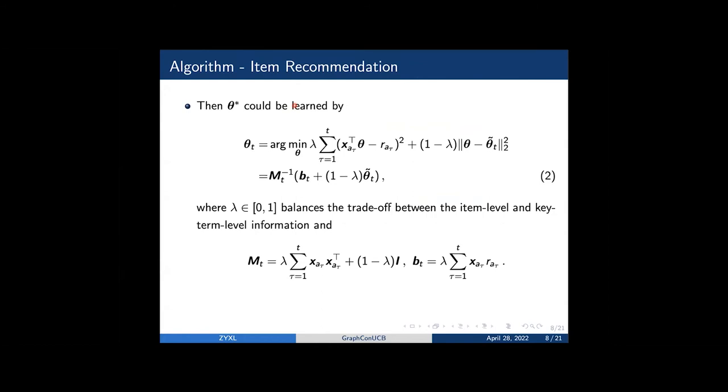After we learn a good tilded c star, we now can learn c star also by ridge regression, but with the guidance by tilded c star t. Here, M is also the gram matrix generated by the item-level feature vectors of selected items.